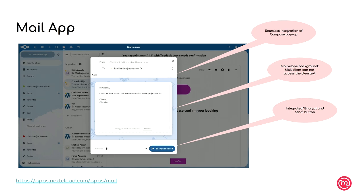The last slide shows how this is currently implemented. You can see the Nextcloud Mail application with a blue-framed area in the compose section — that is Maevelob. It seamlessly integrates into the compose area, and the frame visualizes the strong isolation: everything inside is private and not accessible from the outside email client. The email is encrypted in a safe way, and the buttons are adjusted to this scenario.